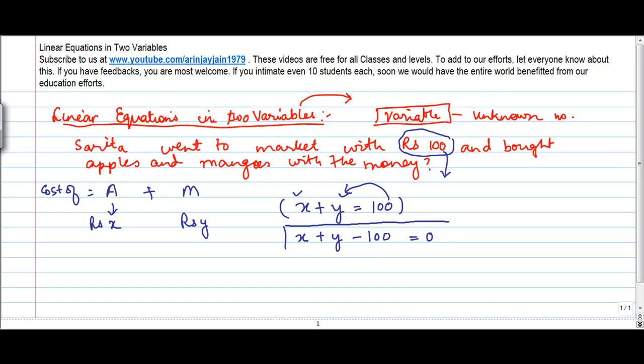Now, if you see this equation x plus y minus 100, what you will notice is that there are two variables involved here, one is x and one is y, and we don't know the value of both of them.